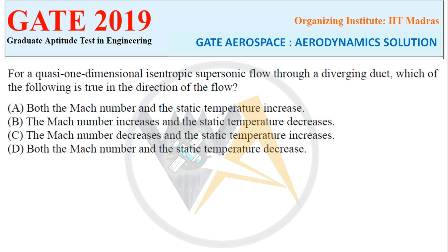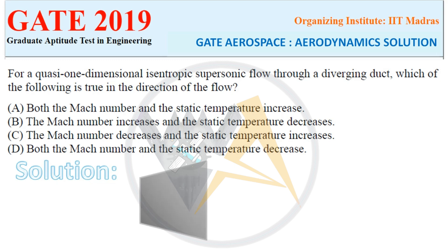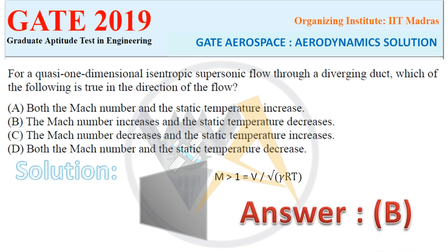Let's see the solution. On your screen you can see a supersonic divergent duct where the flow is supersonic. In this case, let's recall the formula: when the Mach number is greater than 1, that is supersonic flow, we know the formula M = V / √(γRT). Based on this formula, if the Mach number increases, temperature and Mach number are inversely proportional, so when the Mach number increases, the temperature will decrease. So the right option is option B.